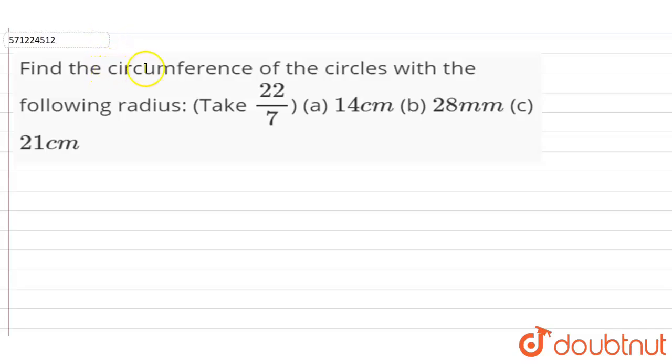Hi students, in this question we have to find the circumference of the circles with the following radius. Take π = 22/7. (a) radius is 14 cm, (b) radius is 28 mm, (c) radius is 21 cm.